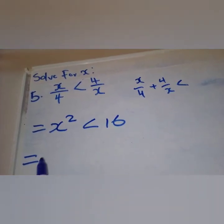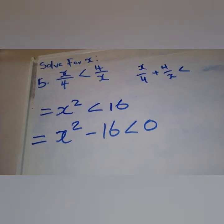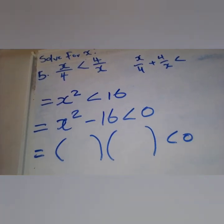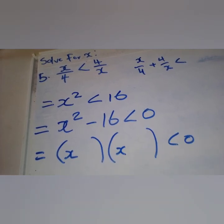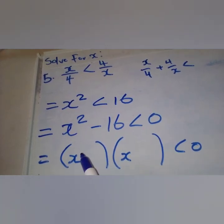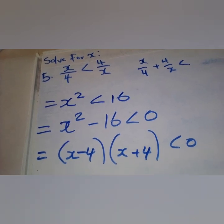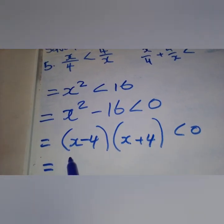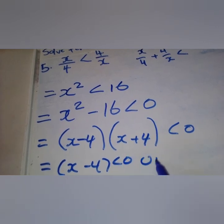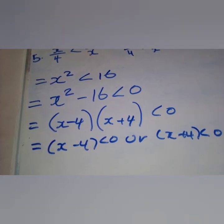Before finding critical values, transpose to get everything in standard form: x squared minus 16 less than zero. We look for two numbers that when multiplied give negative 16 and when added give zero — those are positive four and negative four. So we have (x − 4) < 0 or (x + 4) < 0.